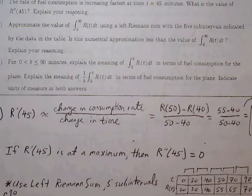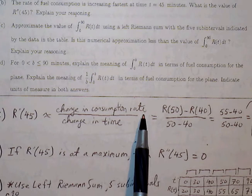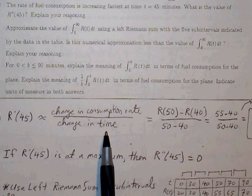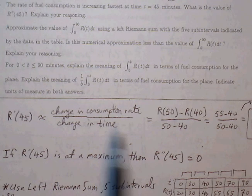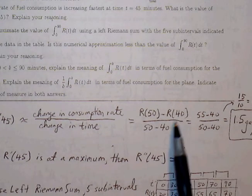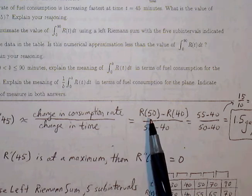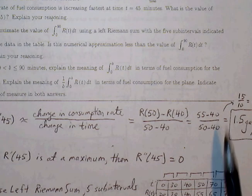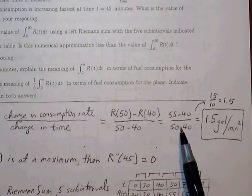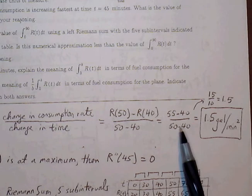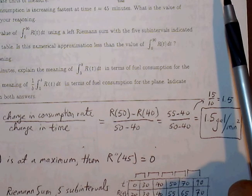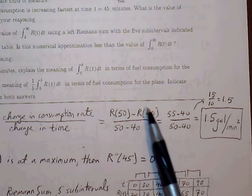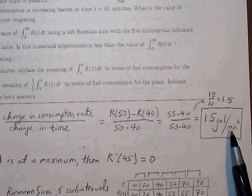R prime of 45 is simply the change in consumption rate divided by the change in time. I picked two ordered pairs around 45: so 40 and 50. R of 50 minus R of 40, all over 50 minus 40 — change in consumption rate over change in time — gives us 55 minus 40 over 50 minus 40, which reduces to 15 over 10, or 1.5.